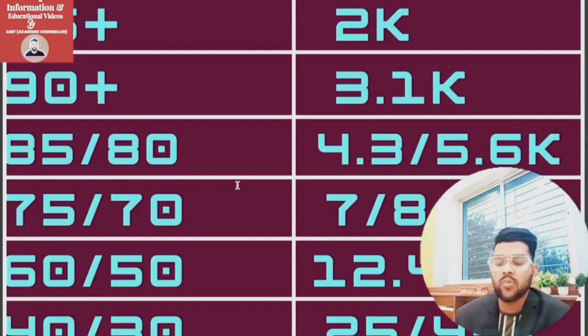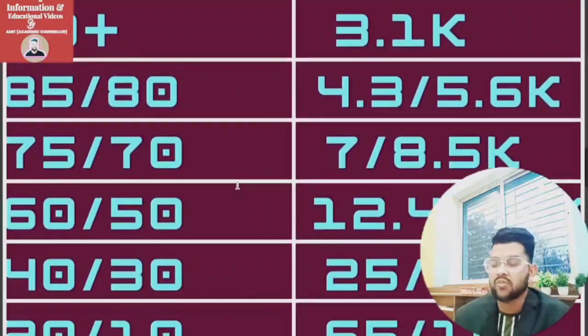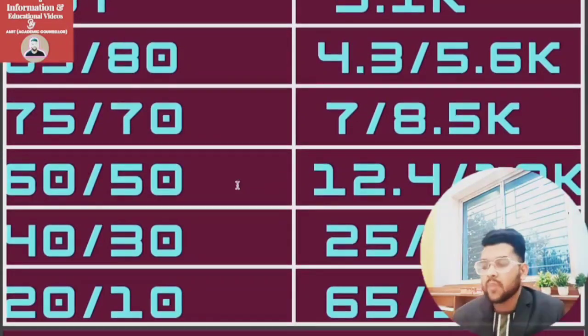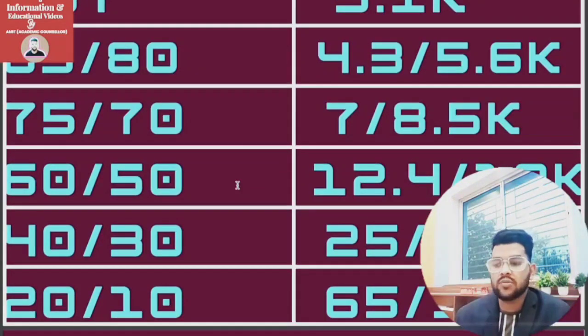For 60 and 50, 12,400 and 19,000 respectively. For 40 and 30, 25,000 and 45,000 respectively. And for 20 and 10, rank will be around 65,000 and 1 lakh respectively.